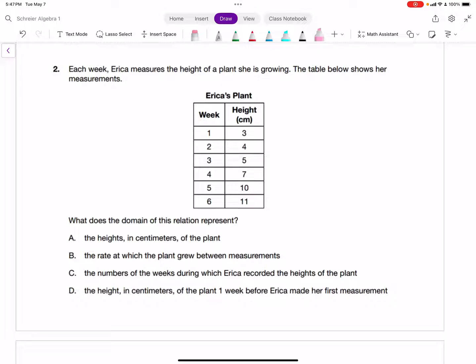We are asked, what does the domain of this relation represent? The domain is the first values or the X values or the first column of the table. We can see at the top of the table, we're talking about the number of weeks. So this one represents one week. The domain is represented by weeks.